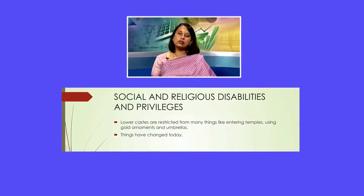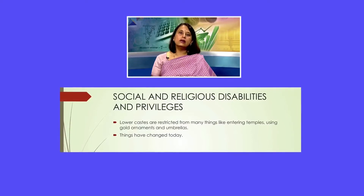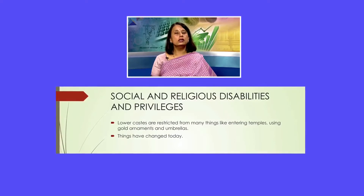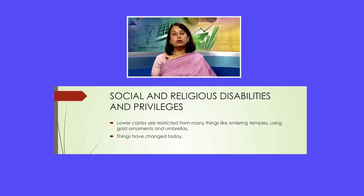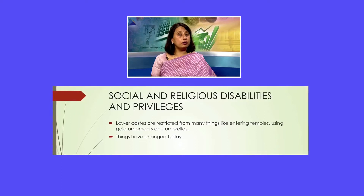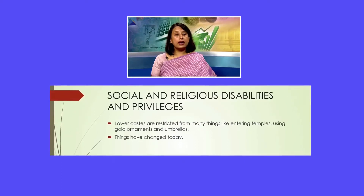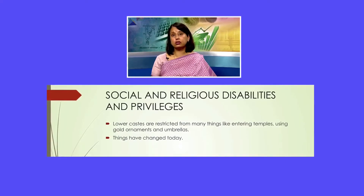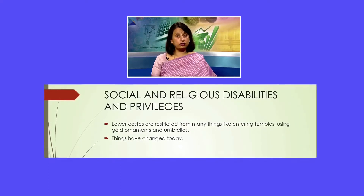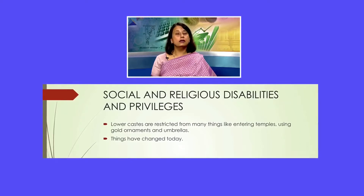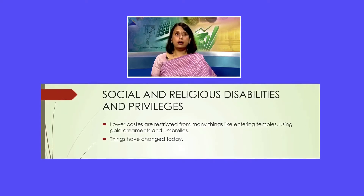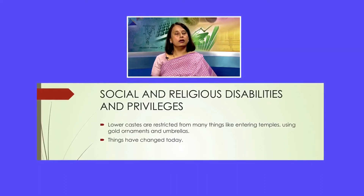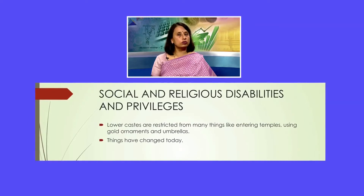In terms of social and religious disabilities and privileges, lower castes had to follow a lot of restrictions. They were not allowed to enter temples, not allowed to wear gold ornaments, and not allowed to use umbrellas. The caste system is not something restricted merely to India — you also find it in other South Asian countries like Pakistan, Sri Lanka, and Nepal. The restrictions placed on the lower castes are universally found across all of these South Asian countries.